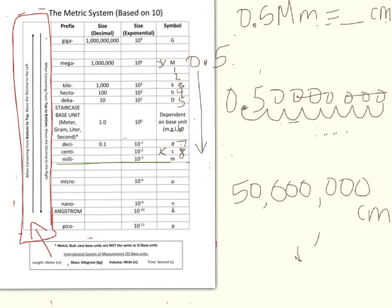Remember: small units require lots of them to make up bigger things. When converting from centimeters to meters you'll always have more centimeters than meters because centimeters take up less space. Hopefully this helps. We're going to do a bunch of practice in class — ask questions or come to office hours if it's not making sense. The metric system is based on ten; it's just moving decimals around. The trick is getting straight in your head which way the decimal has to go.